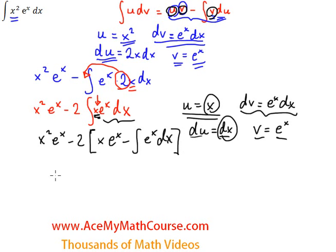Look at that, now we're almost done. So x squared e to the x minus 2 times x e to the x minus, now what is the integral of e to the x? Just e to the x, fantastic.